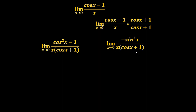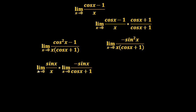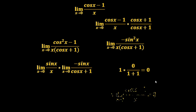This can be written as limit X tends to 0 of −sin²(X) divided by X·(cos(X) + 1). We rewrite this as: limit X→0 of sin(X)/X, multiplied by limit X→0 of −sin(X)/(cos(X) + 1). The first limit is 1. As X tends to 0, sin(0) = 0 and cos(0) = 1, so the denominator becomes 1 + 1 = 2. Thus we get 1 × 0/2 = 0. Hence limit X tends to 0 of (cos(X) − 1)/X equals 0.